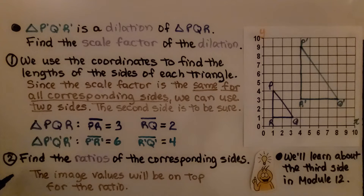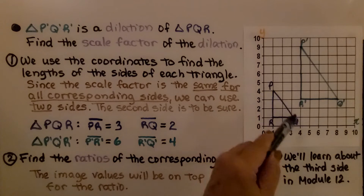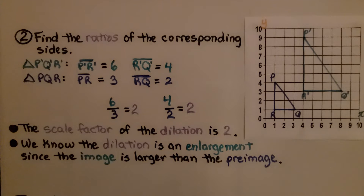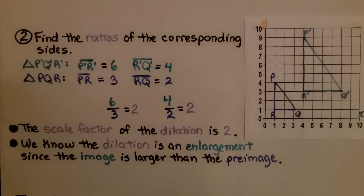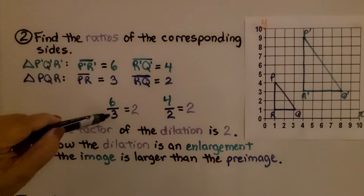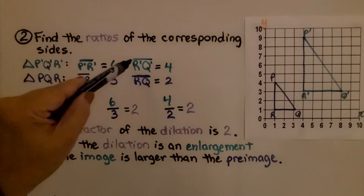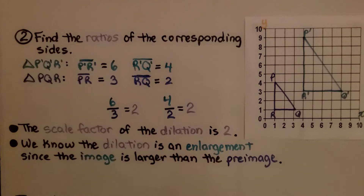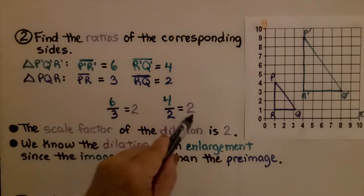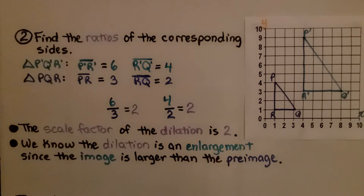The second thing we do is find the ratios of the corresponding sides — the image values will be on top for the ratio. We're not going to use the hypotenuse of this right triangle; we'll learn about that third side in Module 12. For P'R' over PR, we have 6 over 3, which simplifies to 2. For R'Q' over RQ, we have 4 over 2, which also simplifies to 2. Since we get 2 both times, the scale factor of the dilation is 2.